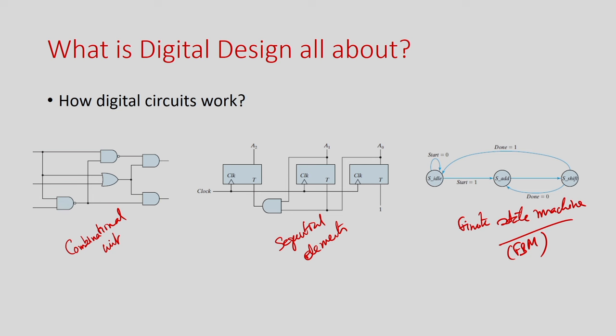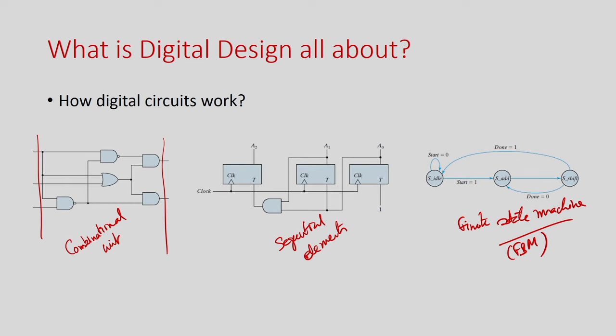In the combinational unit, it is basically the interconnection of gates. Whenever you change one of the inputs, the output will be updated based on recalculations. We need to understand how to develop various components of digital designs — for example, how to develop an adder, a multiplier, a multiplexer, demultiplexer, encoder, decoder, and many other components. Also important in the combinational unit is how you represent numbers: although it is binary, there can be different bases — base 2, base 8, base 16 — as well as IEEE floating-point format and others.